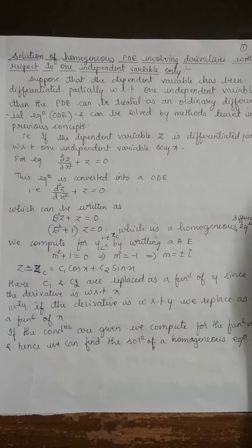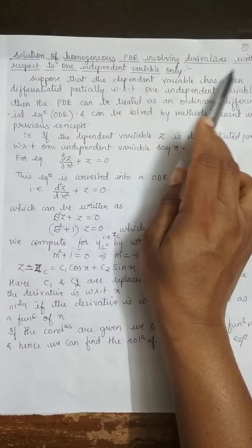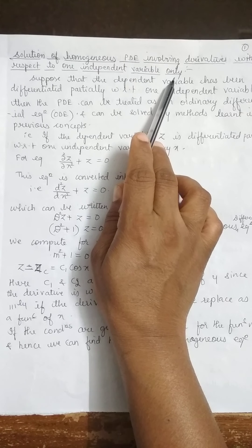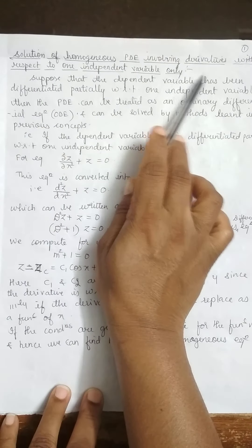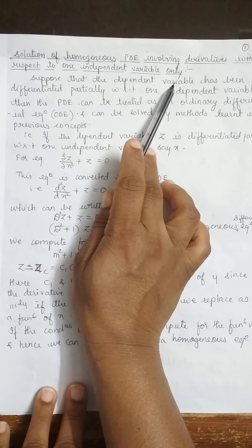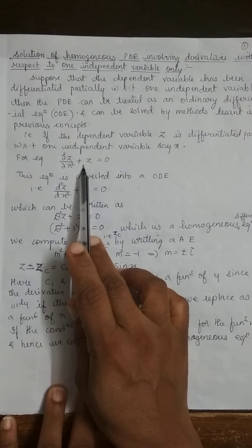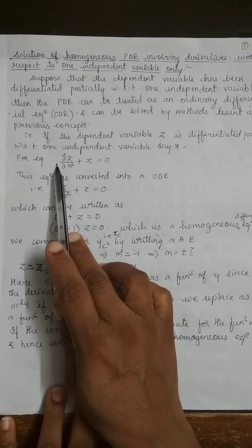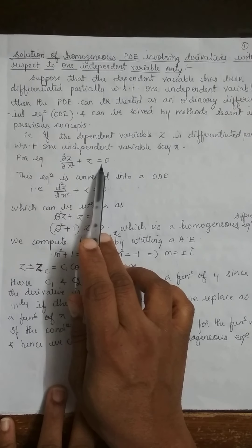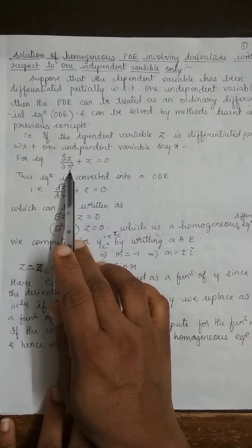Good morning dear students. In the last video we had seen the solution of a non-homogeneous PDE by direct integration. Now we are going to see the solution of a homogeneous PDE involving derivatives with respect to one independent variable. We have the function ∂²z/∂x² + z = 0. Since ∂ appears, this is a partial differential equation of order 2, where z is differentiated with respect to x only.